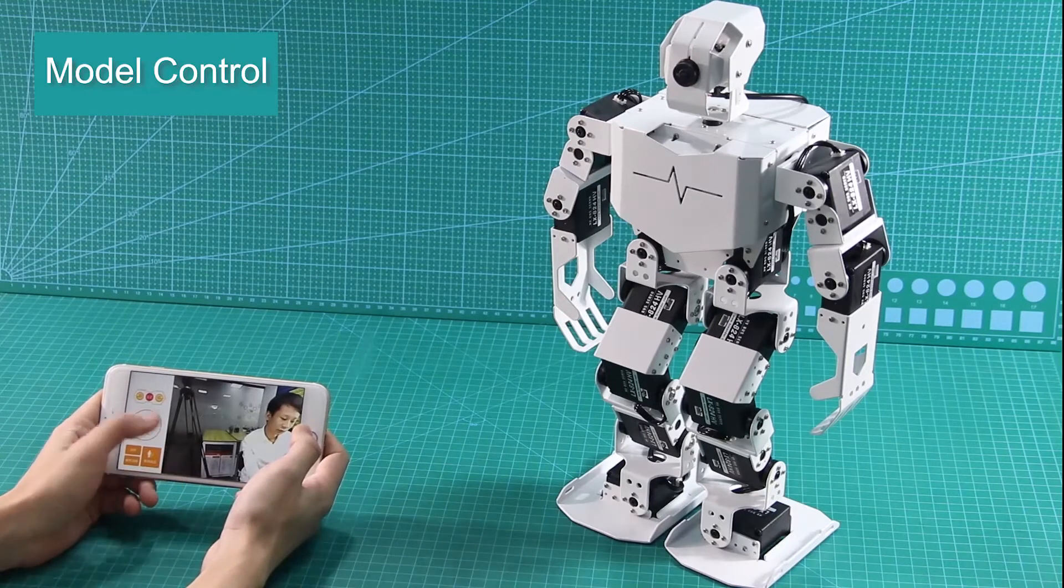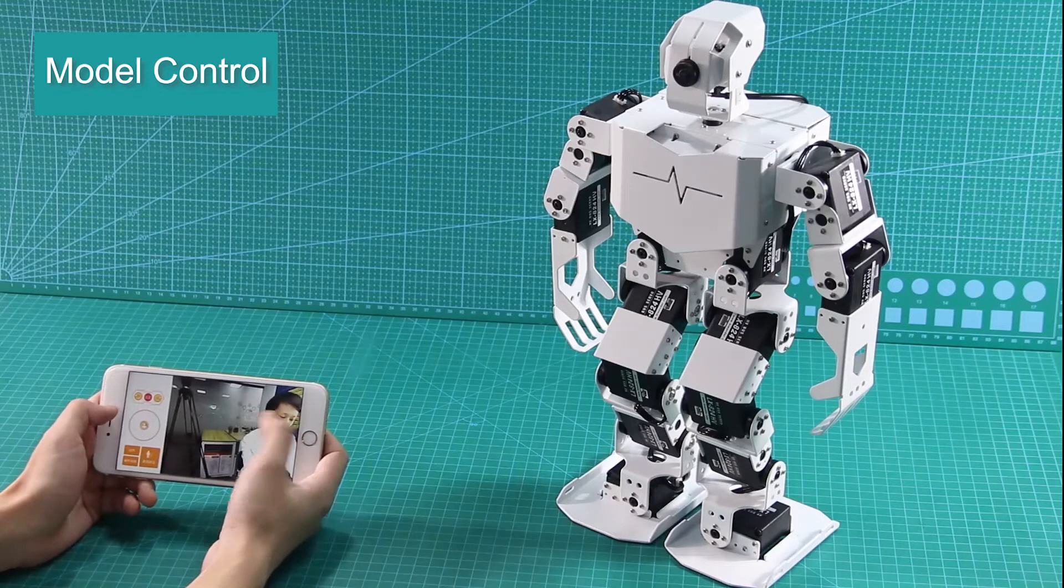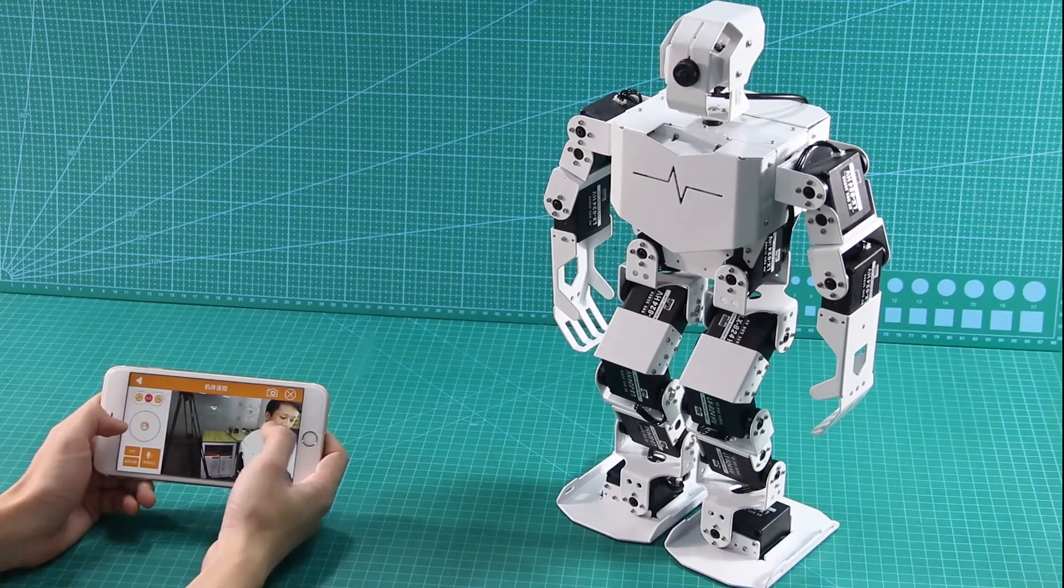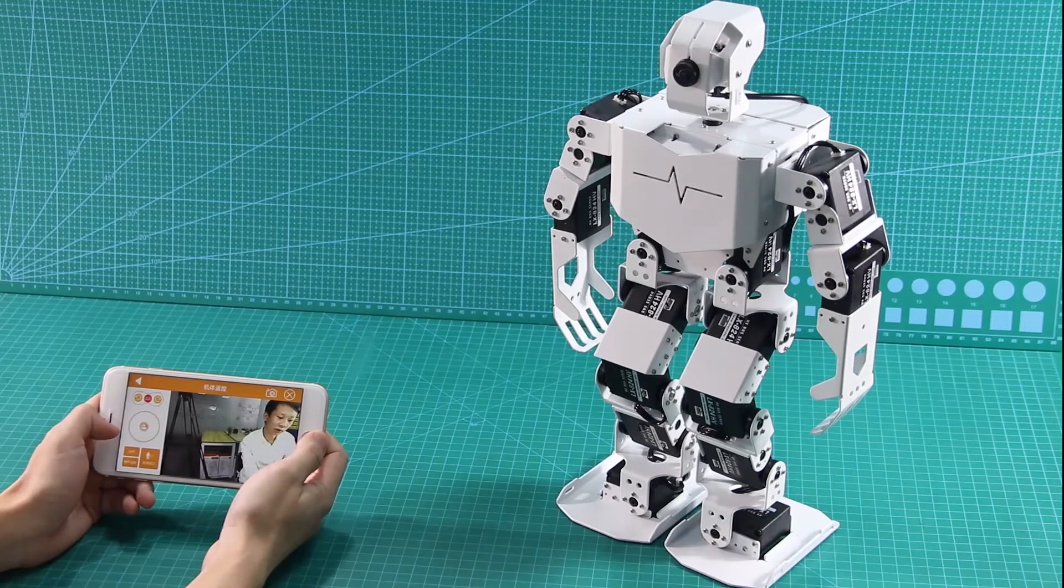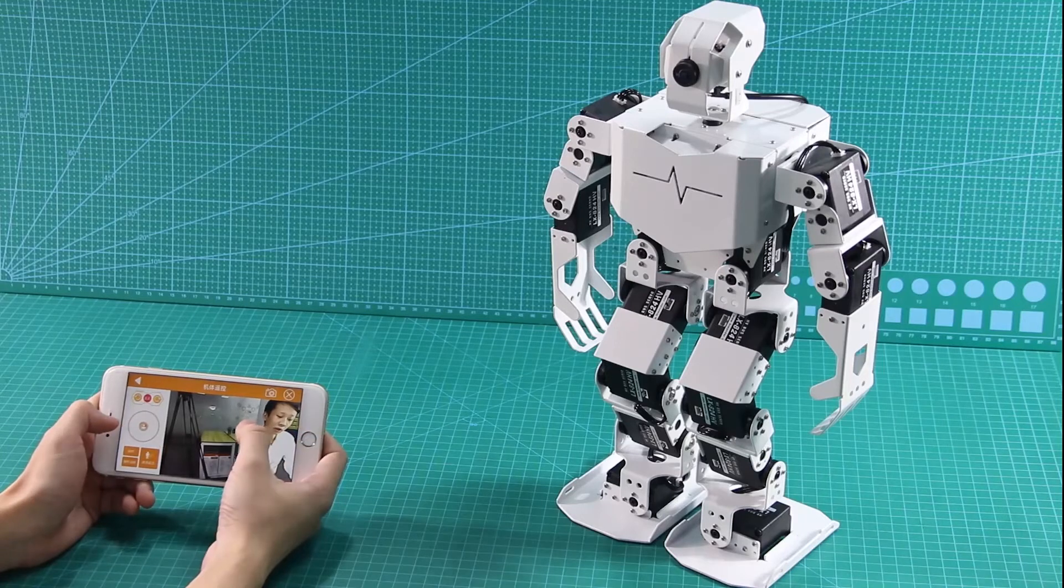We can see that the Module Control interface consists of two parts. On the left side, you can drag the icon to control TonyPi's movement. On the right side, the screen is the real-time image returned by the camera.